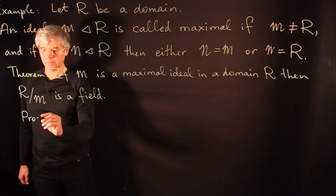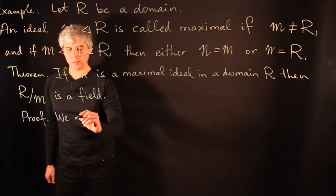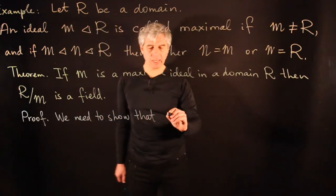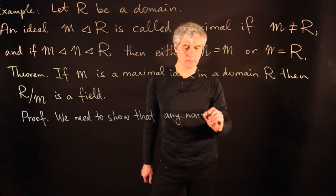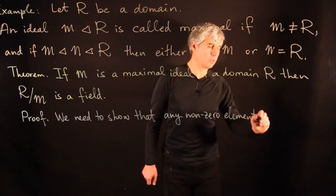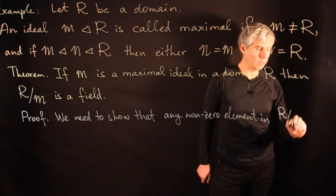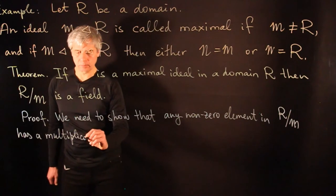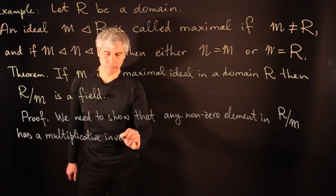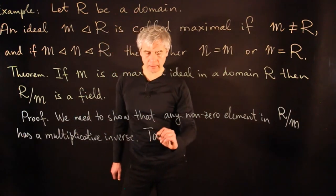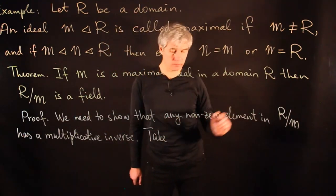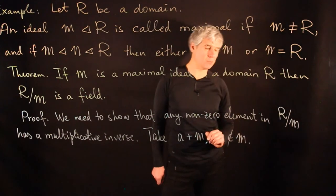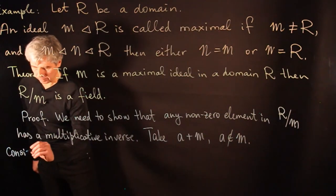Proof: we need to show that any nonzero element in the quotient ring has a multiplicative inverse. We take a nonzero element in the quotient ring, which will be A plus M, where A does not belong to the maximal ideal.